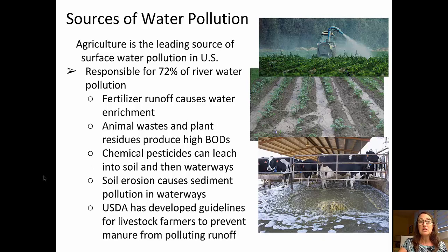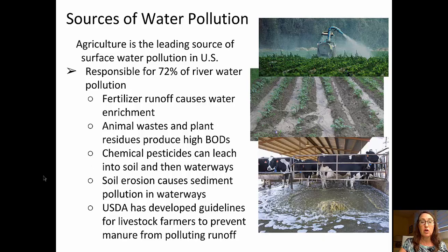Agriculture is the leading source of surface water pollution in the United States, responsible for about 72% of river water pollution. Fertilizer runoff causes water enrichment. Animal wastes and plant residues produce high biological oxygen demands. Chemical pesticides leach into the soil and make their way into waterways via runoff. Soil erosion causes sediment pollution in waterways. The USDA has developed guidelines that livestock farmers are to follow to prevent manure from polluting.